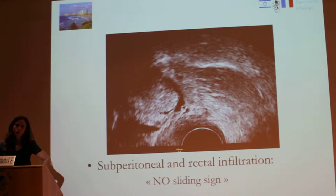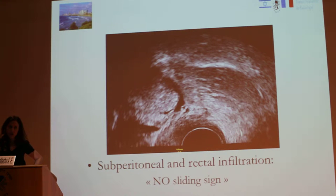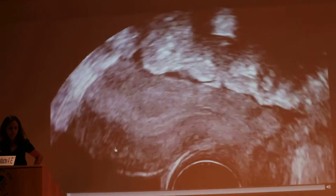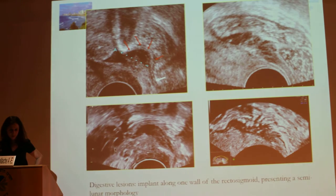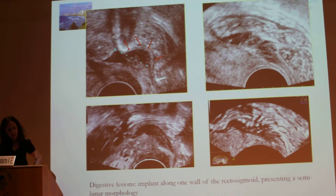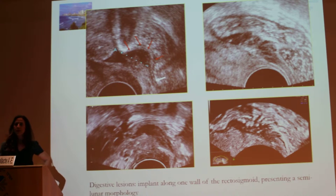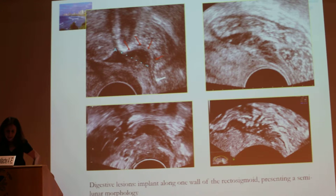It is important to recognize the sliding sign — it means that there are no adhesions. Here you have an example of rectal involvement with ultrasound. It is implanted along one wall of the rectosigmoid presenting a similar morphology with irregular borders. It is quite easy to make the diagnosis with ultrasound because there is a hypoechoic pattern, like you see here.